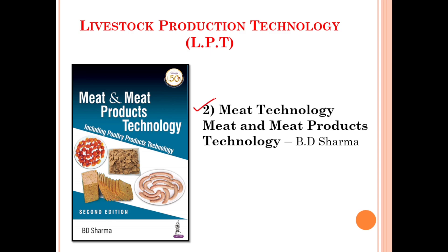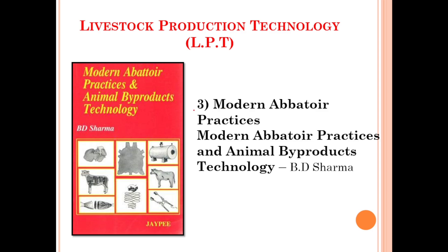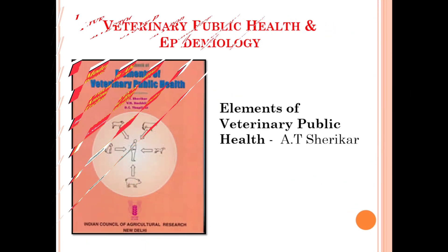For the next subdivision of LPT — meat technology — the standard reference book is 'Meat and Meat Product Technology' by B.D. Sharma. The next subdivision under LPT is modern abattoir practices, and the standard reference book for this is 'Modern Abattoir Practices and Animal Byproduct Technology' by B.D. Sharma.